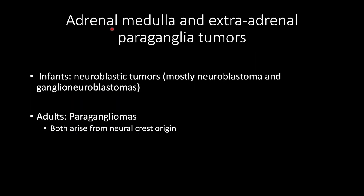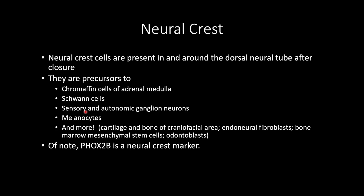In the WHO 5th edition, there's a section within endocrine called adrenal medulla and extraadrenal paraganglia tumors. In the introduction, they divided into infants who get neuroblastic tumors — mostly neuroblastoma and ganglioneuroblastomas, although ganglioneuromas are also present — and adults who often get paragangliomas. Both arise from neural crest origin.